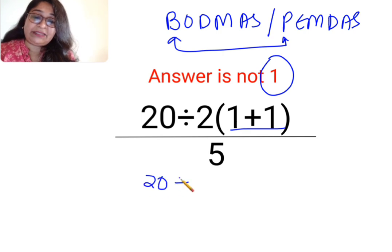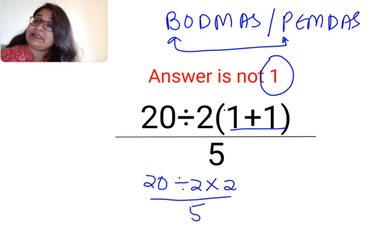So we have 20 divided by 2. Now please understand between this 2 and the bracket there is no sign, which means it is multiplication. Multiplied by 1 plus 1 which is also 2 upon 5. Till here I think everybody did the same thing.